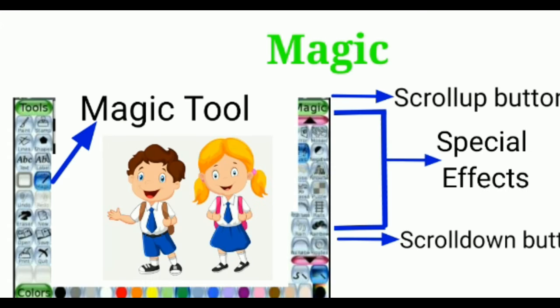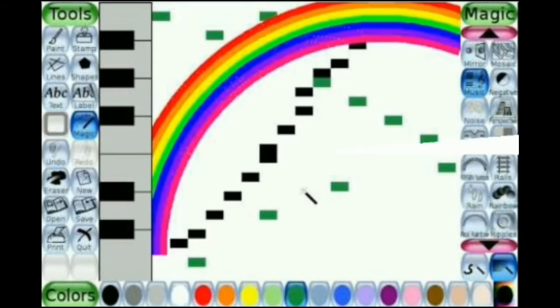Magic tool: The Magic tool helps to create special effects in the drawing area. To give a special effect, first select the Magic tool. You will find many different effects in the options. Then choose the desired effect and move to the drawing area. To apply the effect, you have to either click and drag or simply click once, depending on the effect selected. There are more than 50 effects available. Some of them are discussed below.